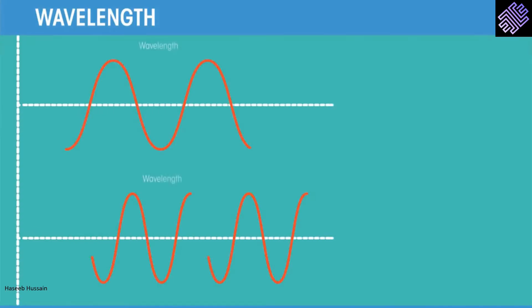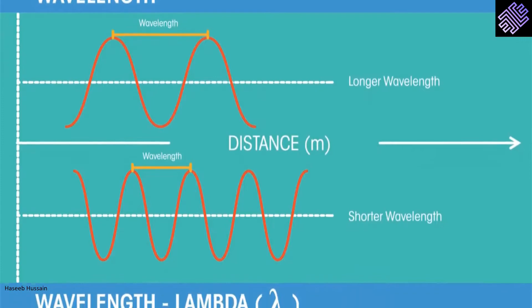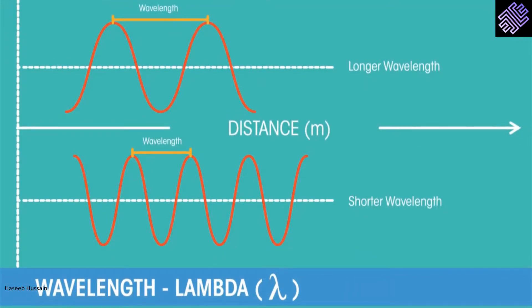Wavelength is the distance between a point on one wave and the same point on the next wave. For example, two peaks or two troughs. Wavelength is given the symbol lambda from the Greek letter and is usually measured in meters.